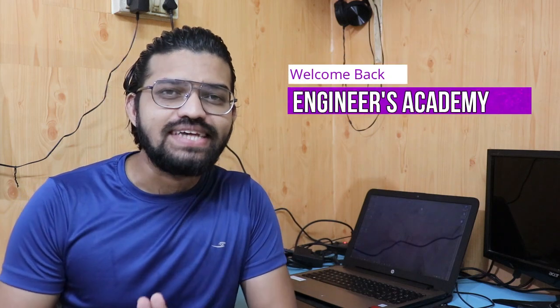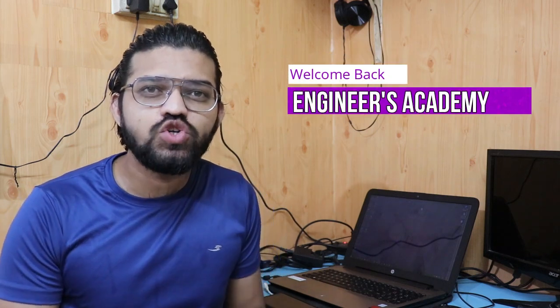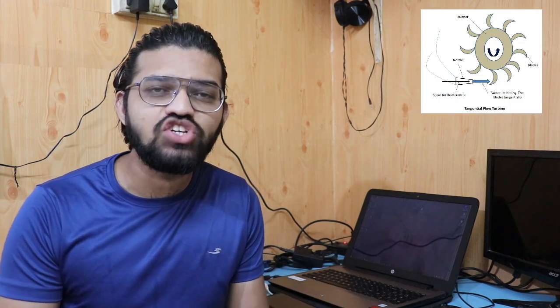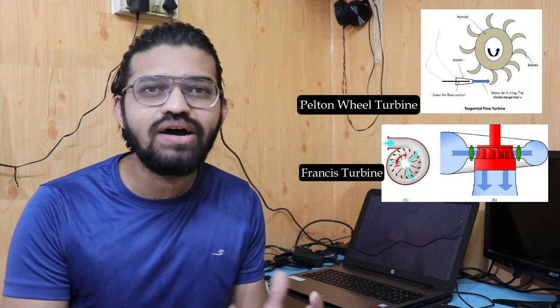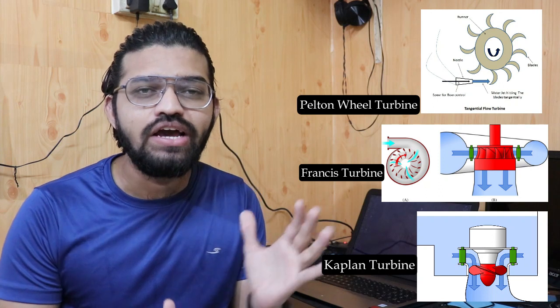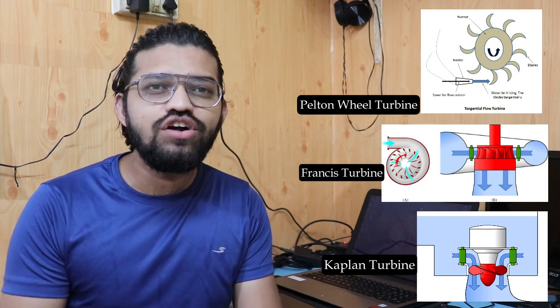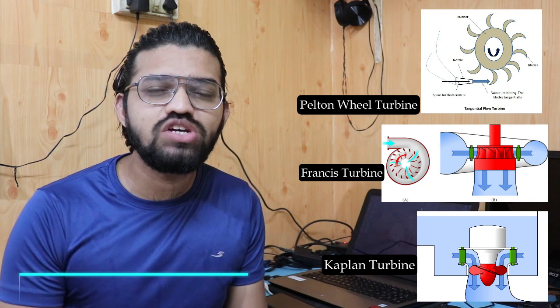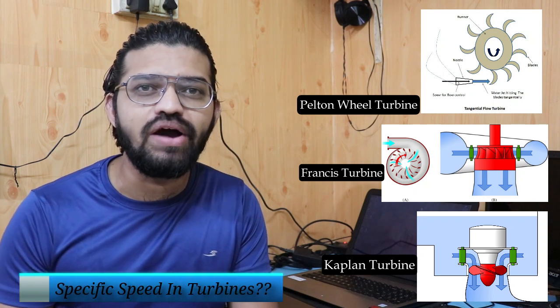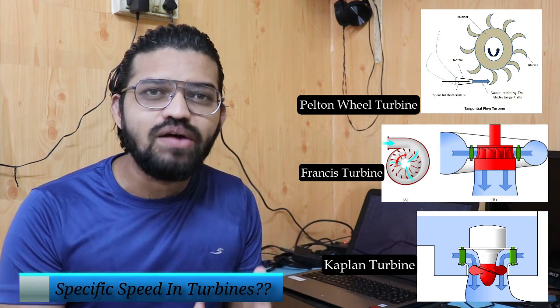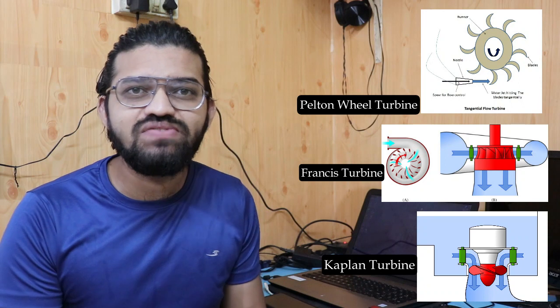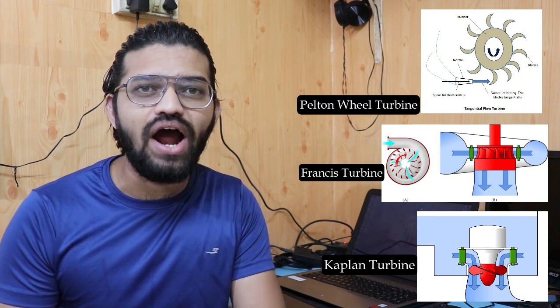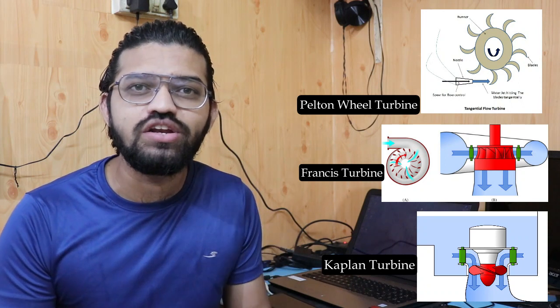Hi everyone, welcome back to another video of Engineers Academy. In the previous videos we have been comparing different types of turbines such as the Pelton wheel turbine, Francis turbine, and Kaplan turbine. Now in this particular video we are going to learn about the specific speed of the turbine — what is the exact meaning of specific speed and why it is required.